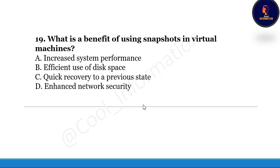Next question: What is the benefit of using snapshots in a virtual machine? Option A: increased system performance, Option B: efficient use of disk space, Option C: quick recovery to a previous state, Option D: enhanced network security. The correct option is Option C, quick recovery to a previous state.